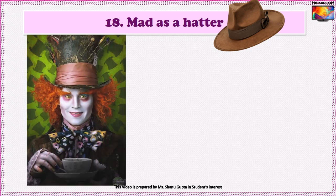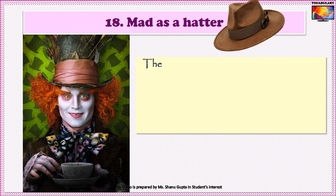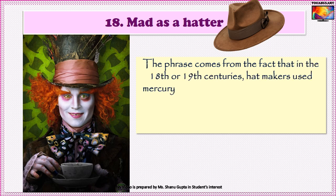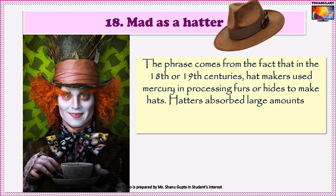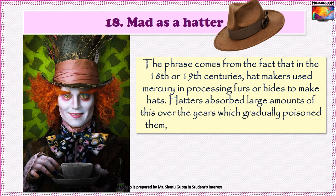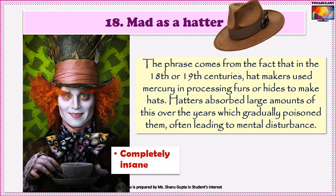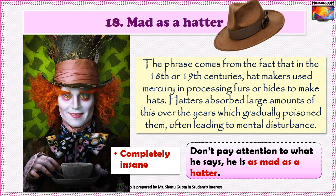Our eighteenth idiom is Mad as a hatter. The phrase comes from the fact that in the eighteenth and nineteenth centuries, hat makers used mercury in processing furs or hides to make hats. Hatters absorbed large amounts of this over the years, which gradually poisoned them, often leading to mental disturbance. So the idiom 'as mad as a hatter' means completely insane. For example: Don't pay attention to what he says — he is as mad as a hatter.